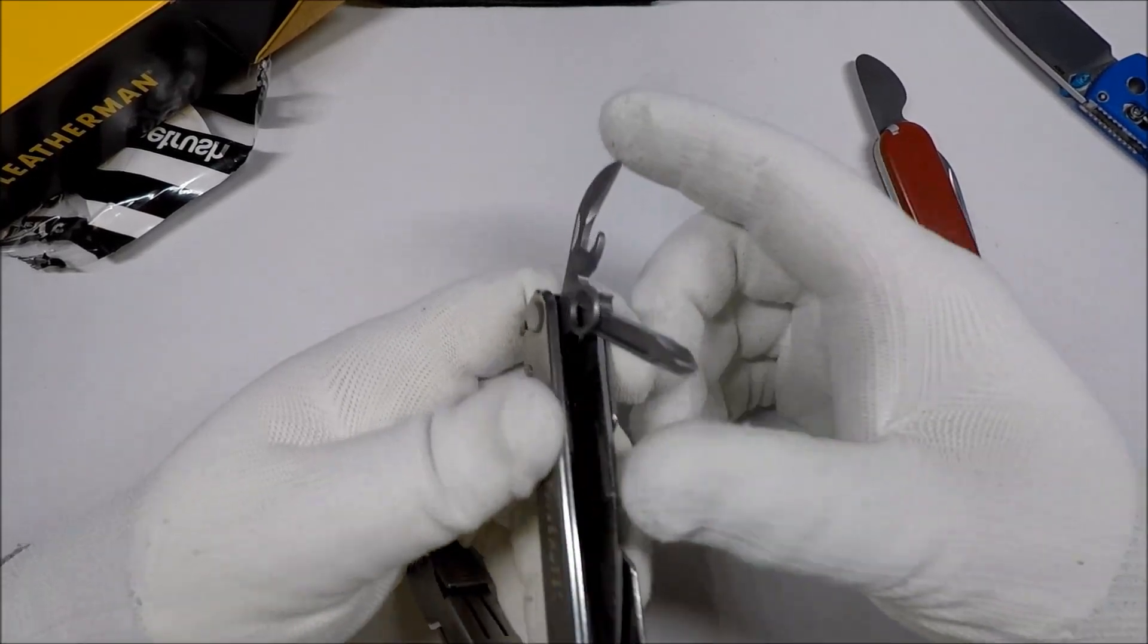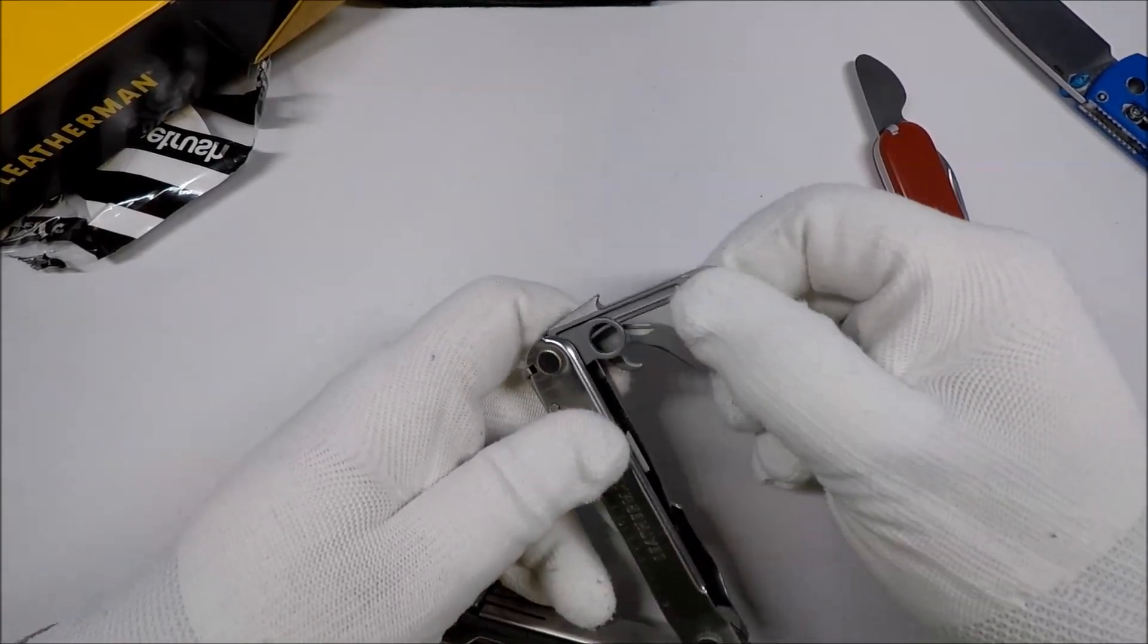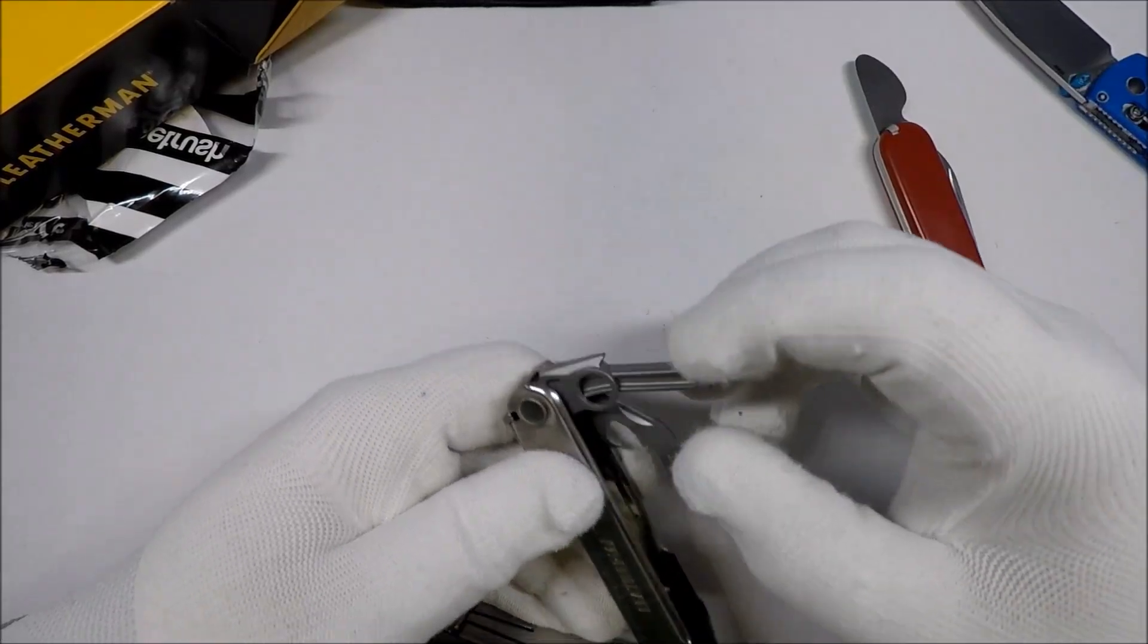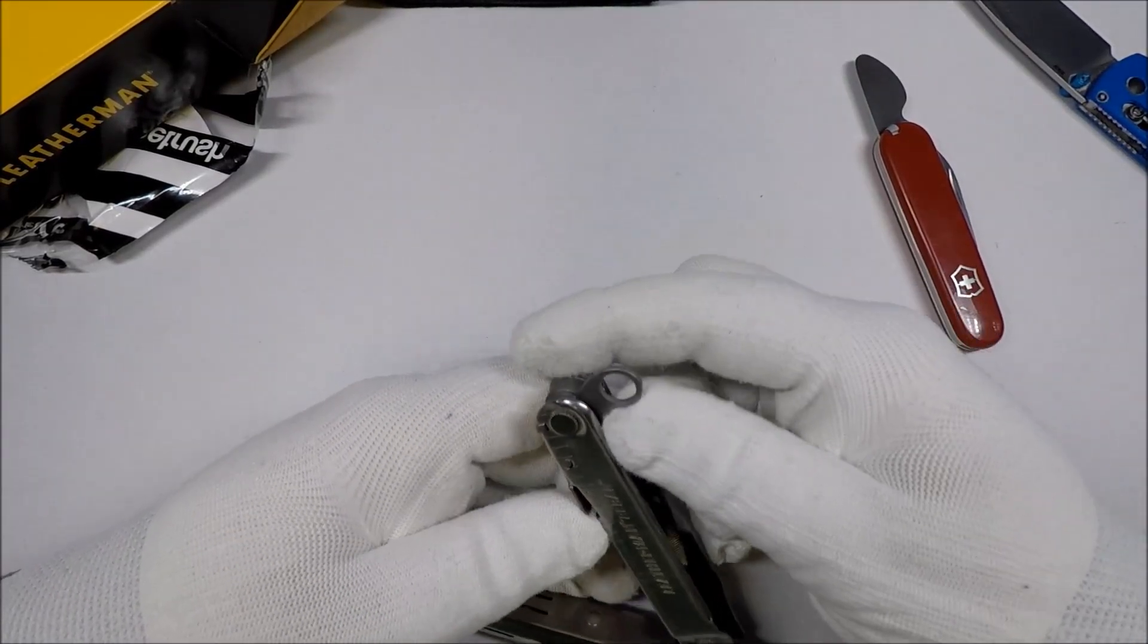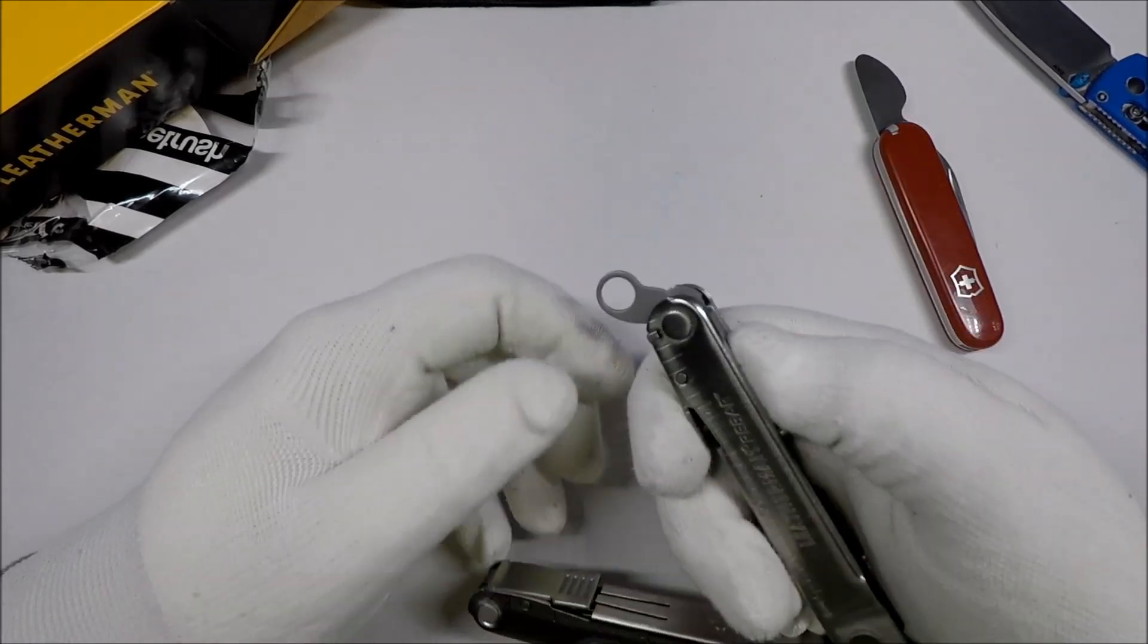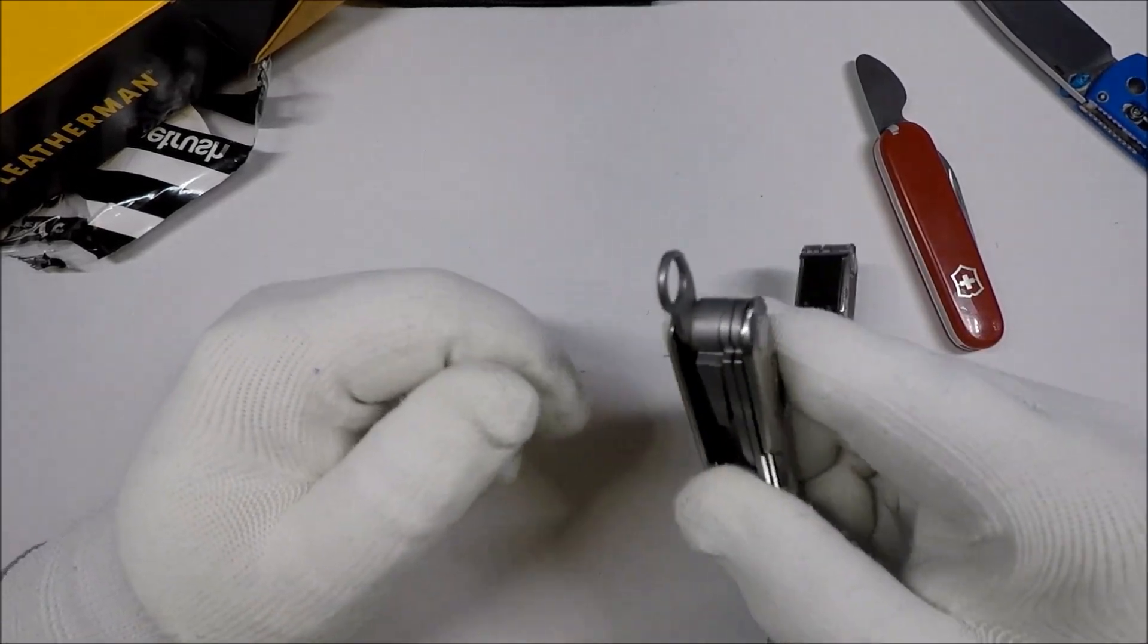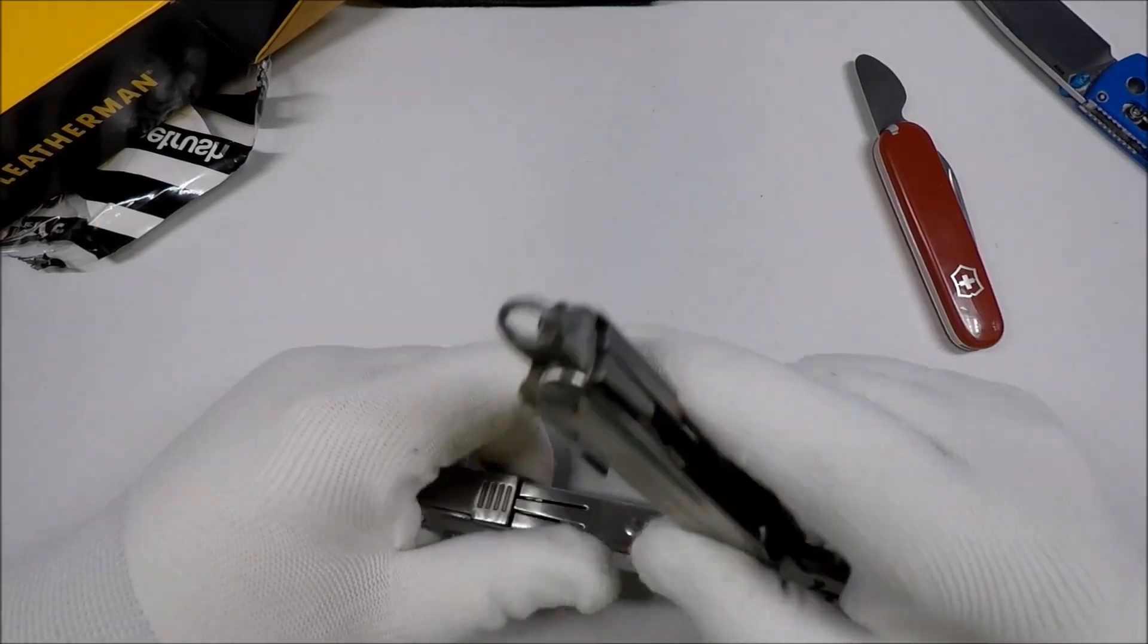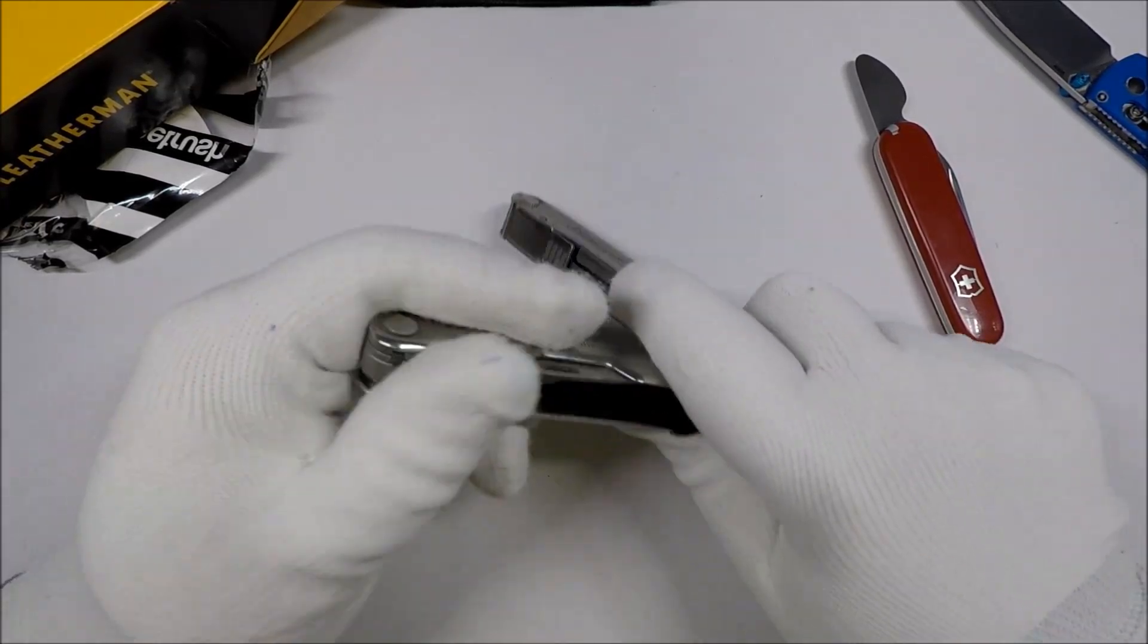We got a can opener, we got a Phillips head screwdriver, and a lanyard loop maybe. Yeah, it looks like something to tie a lanyard to. That's kind of neat.